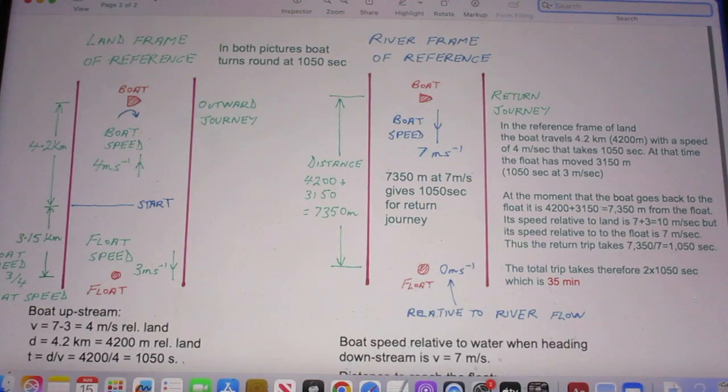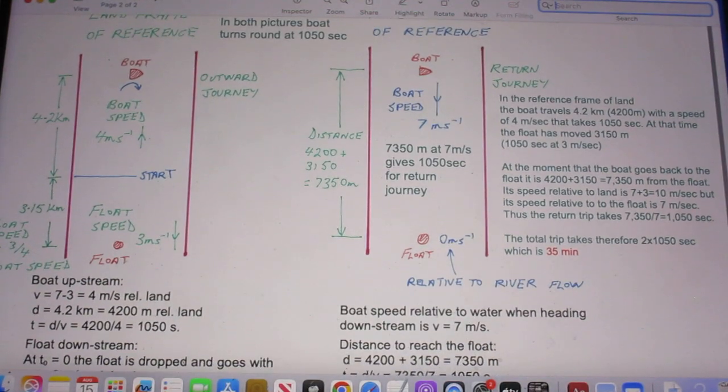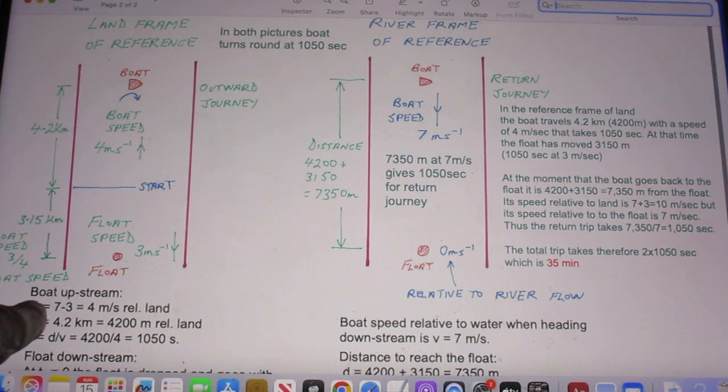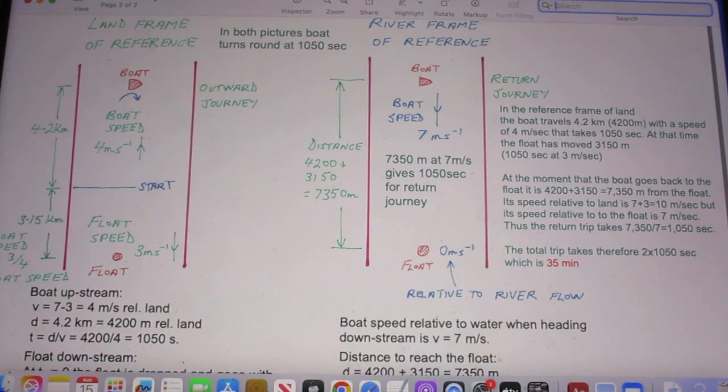Let us start by taking the land as a reference frame. And so you have to look here, but I also wrote down here basically what this print is there. So I will read what I wrote here. In the reference frame of land, the boat travels 4.2 kilometers with a speed of 4 meters per second, and that takes 1050 seconds. At that time the float has moved 3,150 meters.